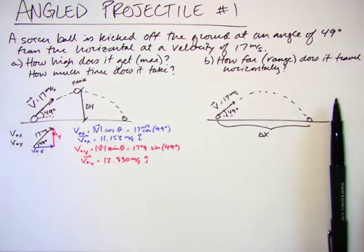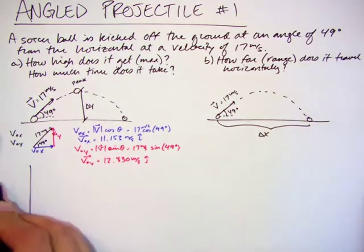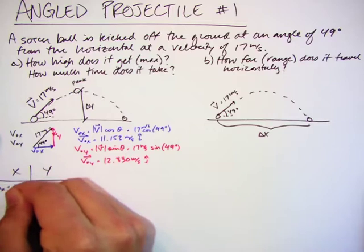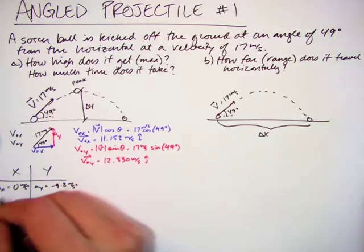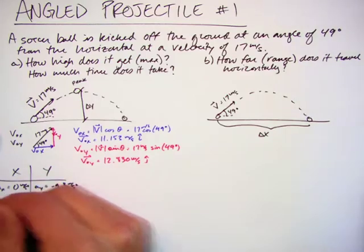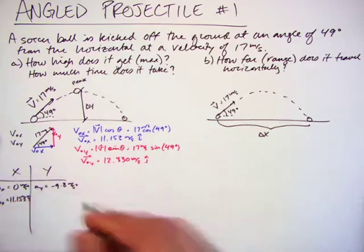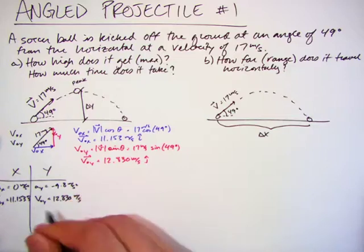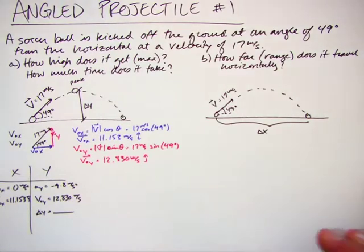Now I can set up my problem. Let's build a table, xy table. I know that ax is zero, ay is negative 9.8. Now v0x is 11.153, v0y is 12.830, and I want to find delta y. And that's all I know.